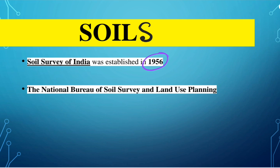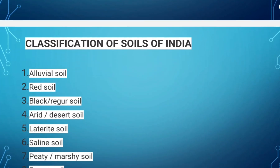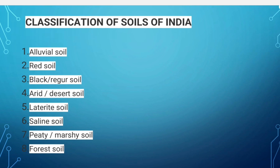The Soil Survey of India was established in 1956. The Soil Survey of India and the National Bureau of Soil Survey and Land Use Planning comes under ICAR — the Indian Council of Agricultural Research. ICAR has classified Indian soil into eight types on the basis of their formation, color, composition and location.